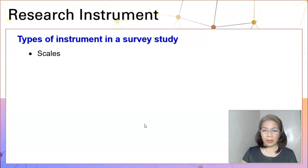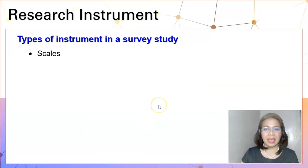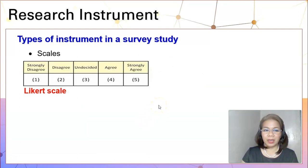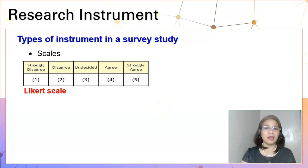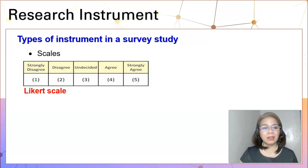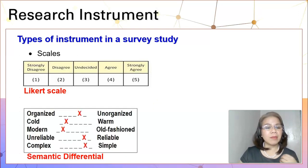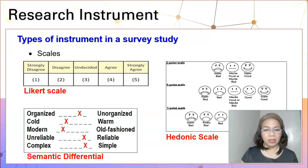Your research instrument could be measurable with a scale. This scale could be a Likert scale — it can be a 3-point Likert scale, 5-point Likert scale, or 7-point Likert scale. Or it can be measurable with a semantic differential or with a hedonic scale.